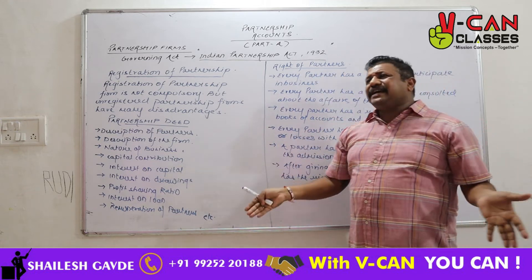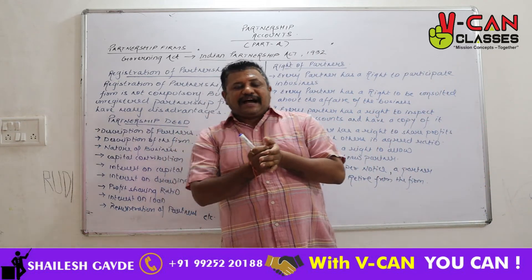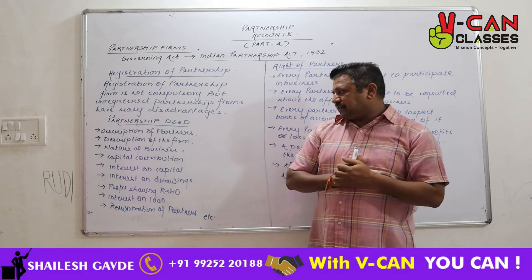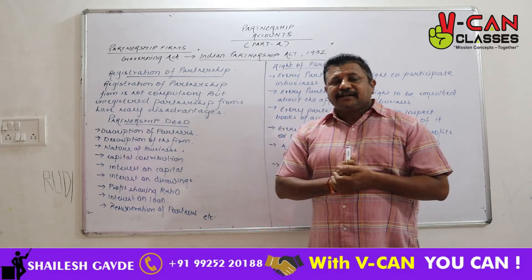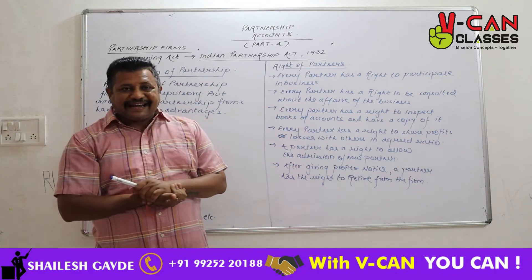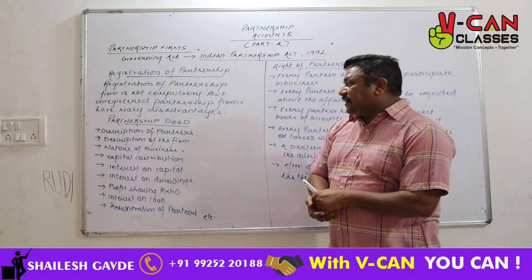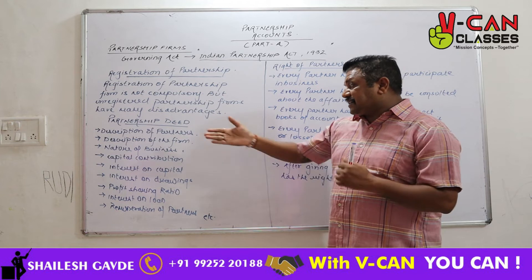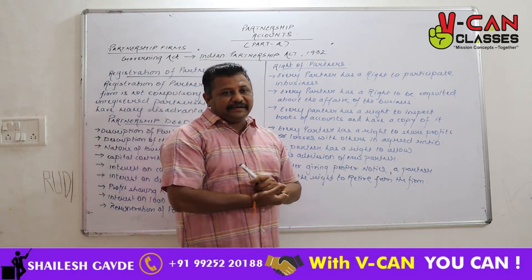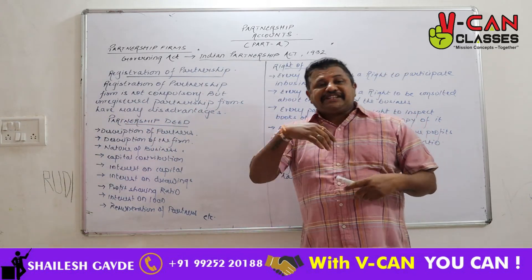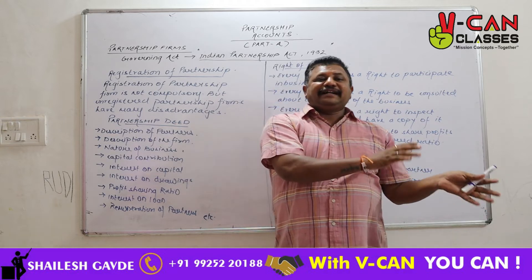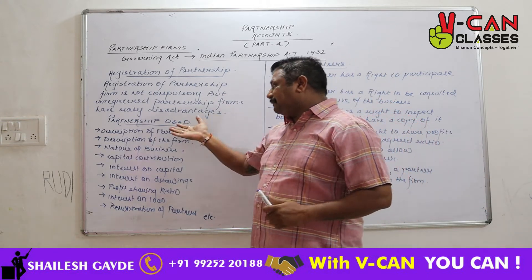In the partnership deed, all rules and regulations with regard to the partners and provisions of the firm are specified. The description of the partners and the description of the firm are included. The nature of the business of the firm — which type of business they are dealing in — the whole nature of business is specified in the partnership deed.